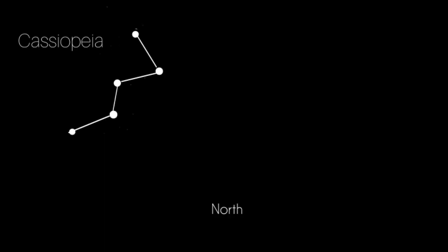I want you to pick out the middle star of the W, which is Gamma Cassiopeia, and then we want the star below it, which is Delta Cassiopeia.